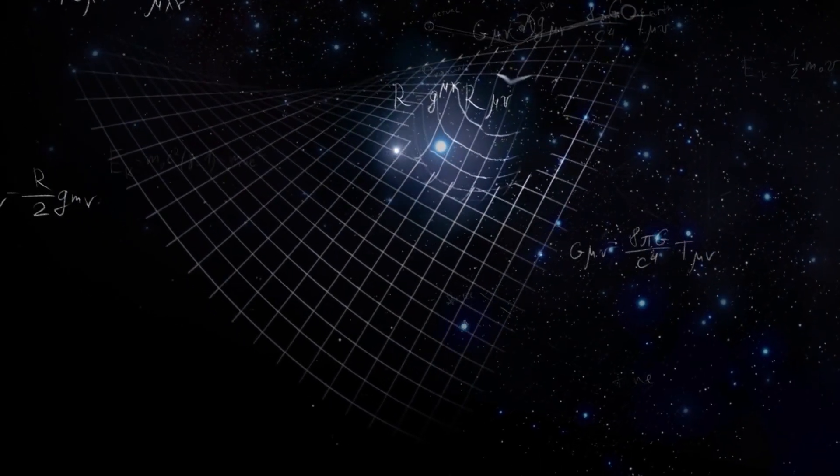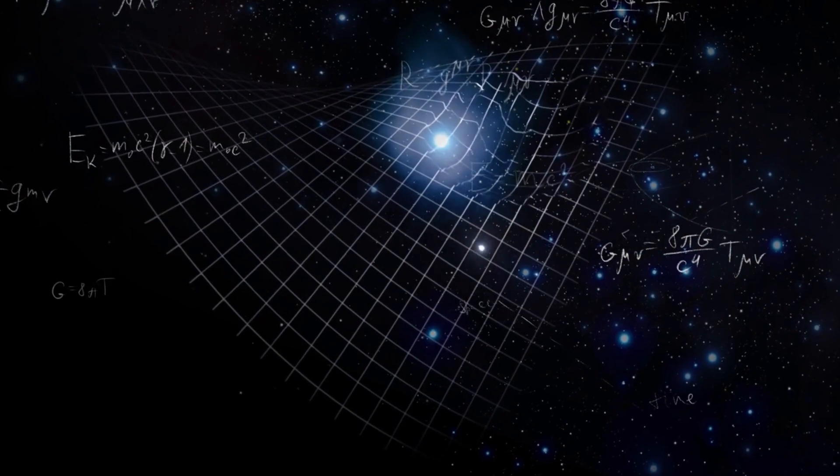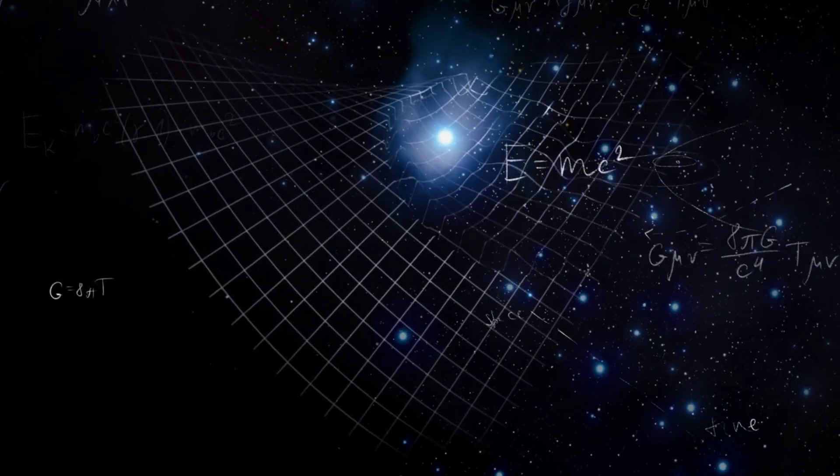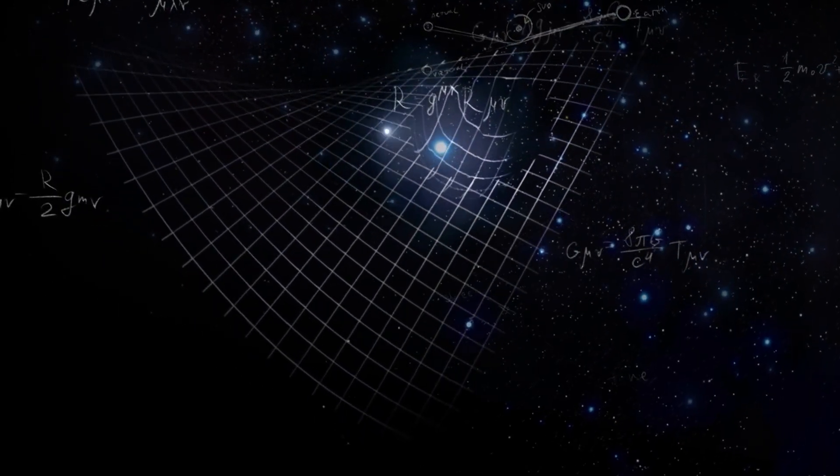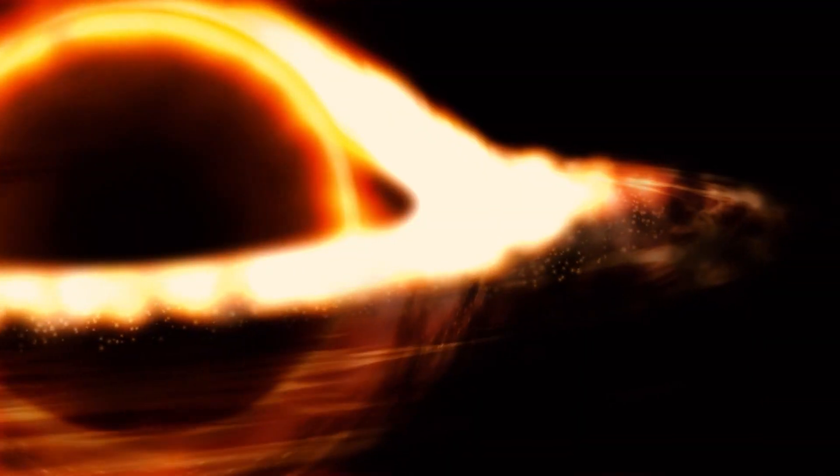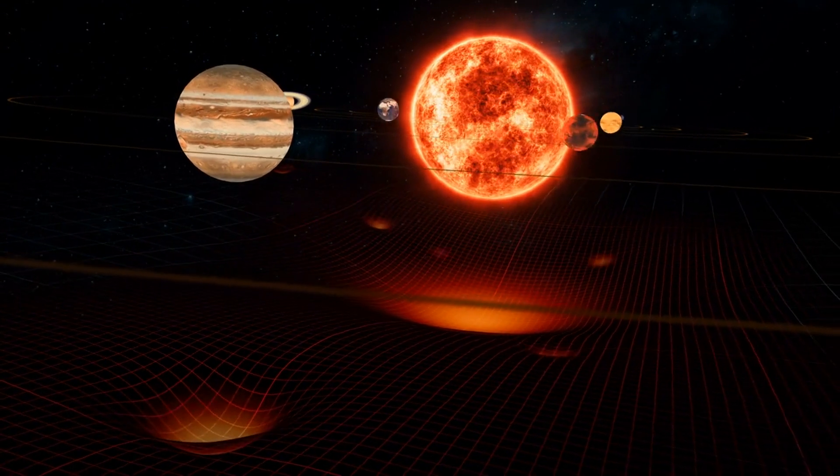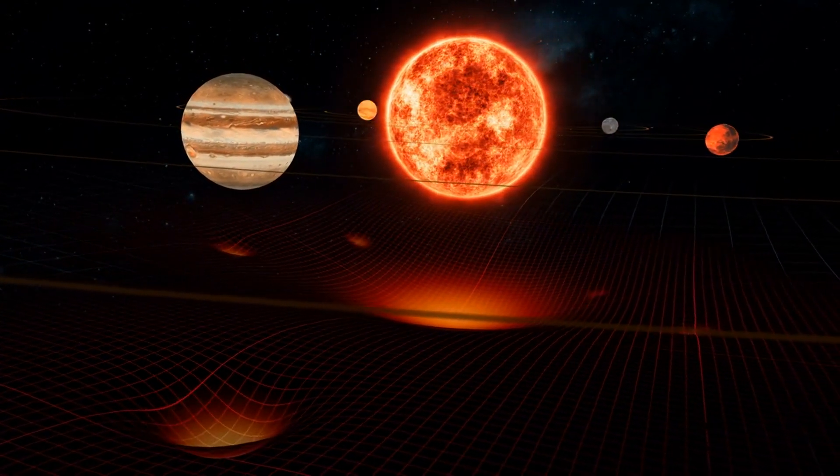Einstein proposed that spacetime, a four-dimensional continuum of space and time, is not static but can be warped or curved by mass and energy. This curvature of spacetime is what we perceive as gravity. Larger masses cause more significant curvature, leading to stronger gravitational attraction.